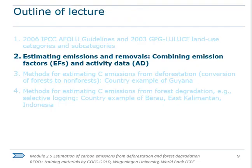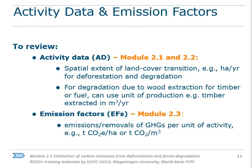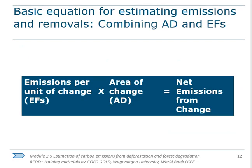To estimate emissions resulting from land use change conversions as well as land use, one must develop emission factors with activity data corresponding to the predefined land use or land use conversion. As a quick review: activity data are a measure of the extent of land cover transition, described either in terms of spatial extent or in units of production like timber volumes. Emission factors are a measure of the emissions or removals per unit of activity data.